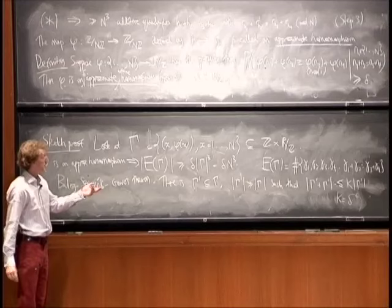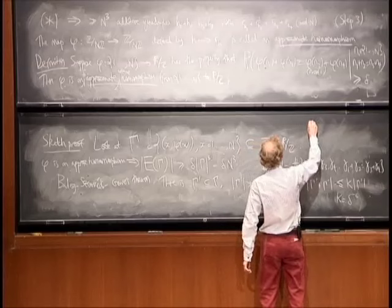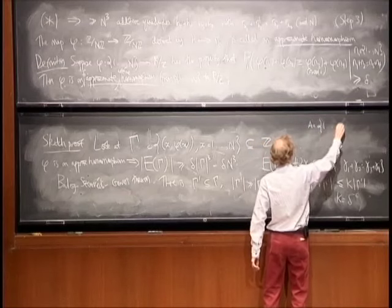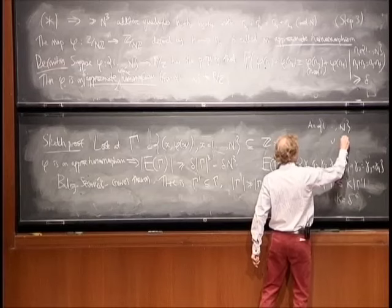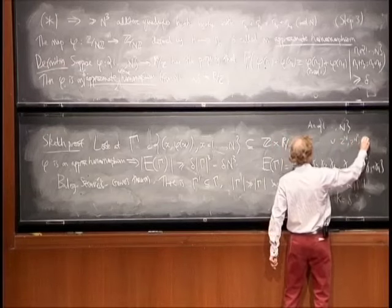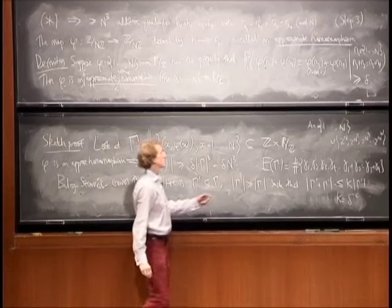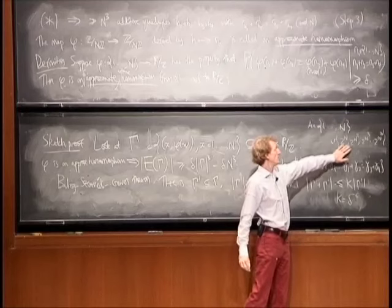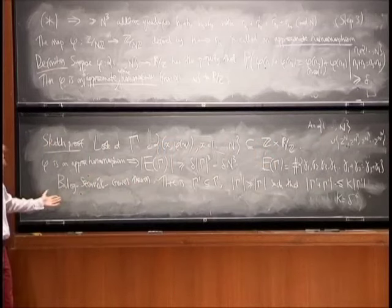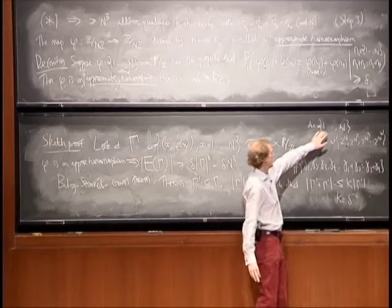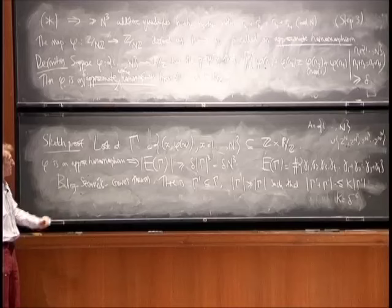So I should perhaps explain this. What kind of sets have large additive energy? Let me just think about subsets of Z. Here is an example of a set with large additive energy. I'll take A to be 1 up to N union just some other points. I don't know, 2 to the N, 2 to the N squared, 2 to the N cubed, 2 to the N to the N. So that set has large additive energy because there are many solutions to X plus Y equals Z plus W inside here. There are none inside here at all, but it doesn't matter. There are plenty inside there. So what this Balog-Szemeredi-Gowers theorem is doing is it's extracting that structured component here.